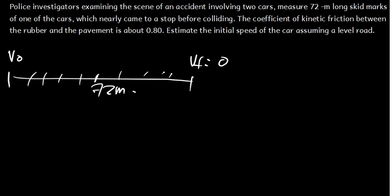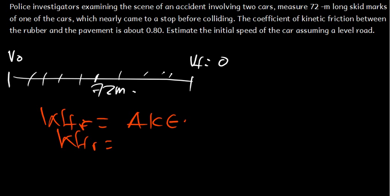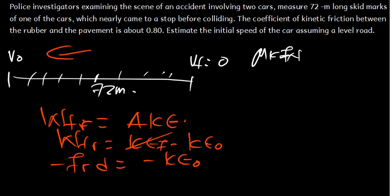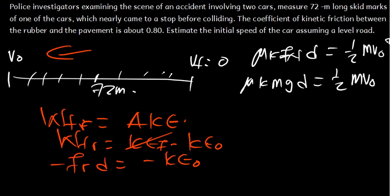We are going to use the work-energy theorem: the work done by the friction force is equal to the change in kinetic energy, which is kinetic energy final minus kinetic energy initial. Work is friction force times displacement, but since friction opposes the motion, it is negative. So: negative friction force times distance equals negative one-half m·v_initial². The friction force is μ_k times the normal force, and the normal force is mg, so: μ_k · mg · d = one-half · m · v_initial². We can cancel the mass.